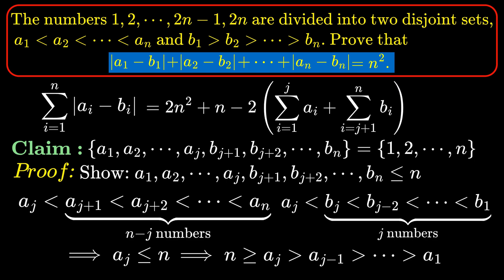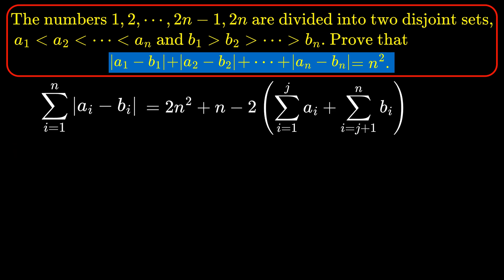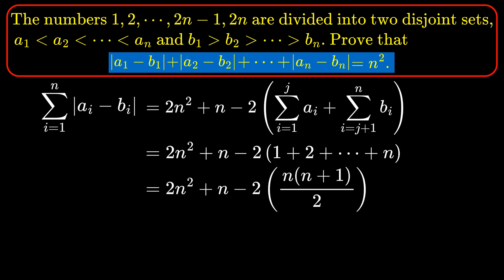meaning it is less than n numbers, so it must be ≤ n, which proves that a1 up to a_j are all ≤ n. Hence, since the n numbers a1, a2, up to a_j and b_{j+1}, b_{j+2}, up to b_n are all ≤ n, they must in fact equal the set {1, ..., n}. So the two sums equal n(n+1)/2 and the final answer is n squared.